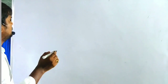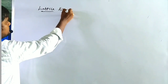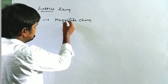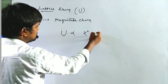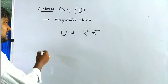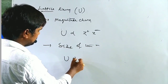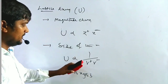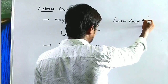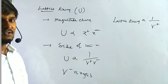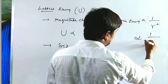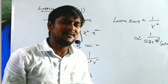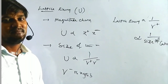Lattice energy depends on several factors. The first factor is magnitude of charge: lattice energy (μ) is directly proportional to the charge of the cation or anion. The second factor is the size of the ions: μ is inversely proportional to (r_cation + r_anion). Generally, since r_anion is considered negligible, lattice energy is inversely proportional to the size of the cation. A smaller cation means higher lattice energy; a larger cation means lower lattice energy.